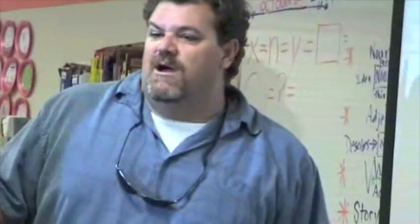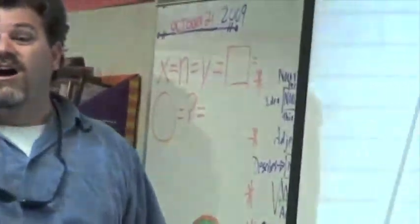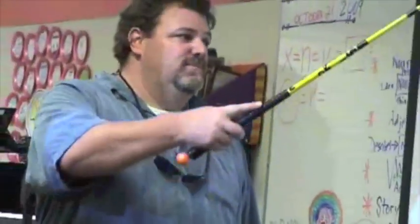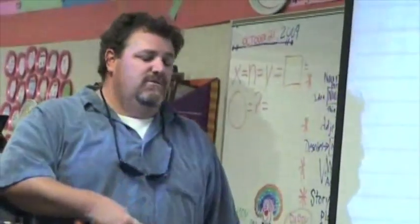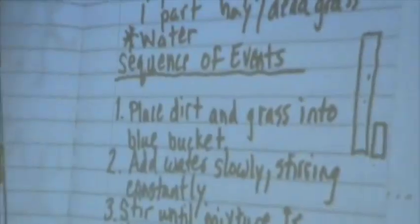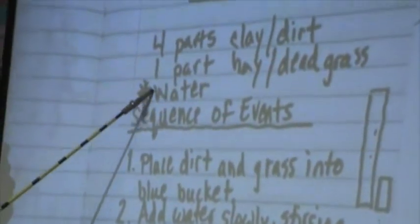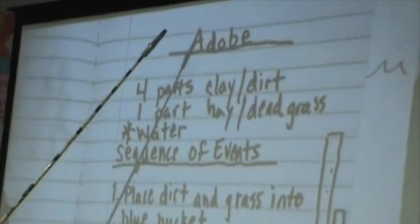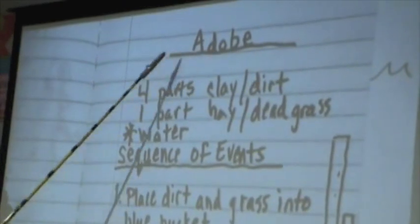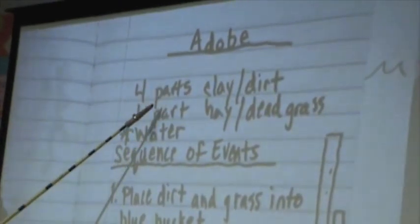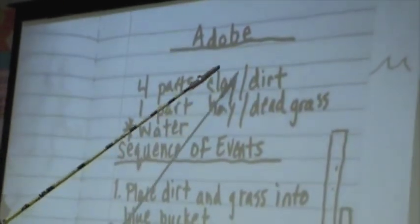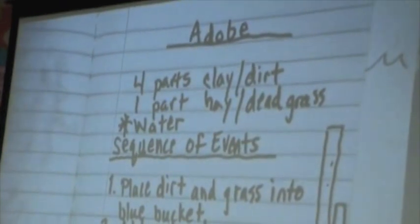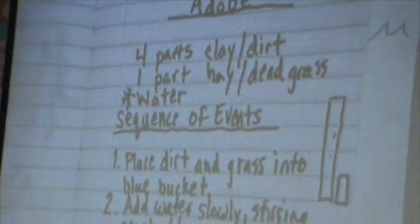Everyone look up on the screen. We're going to come back to our recipe — sometimes we make cookies with it, so what would we call this? It's a recipe. At the top, after we titled it, we put a group of things. What would we call this group of items? Ingredients.